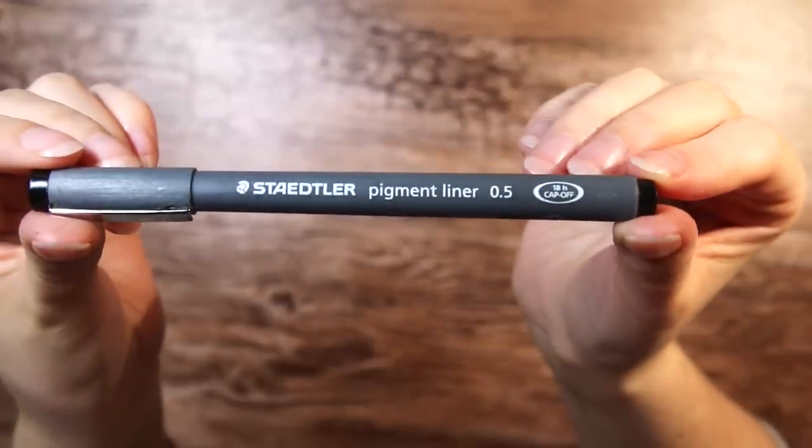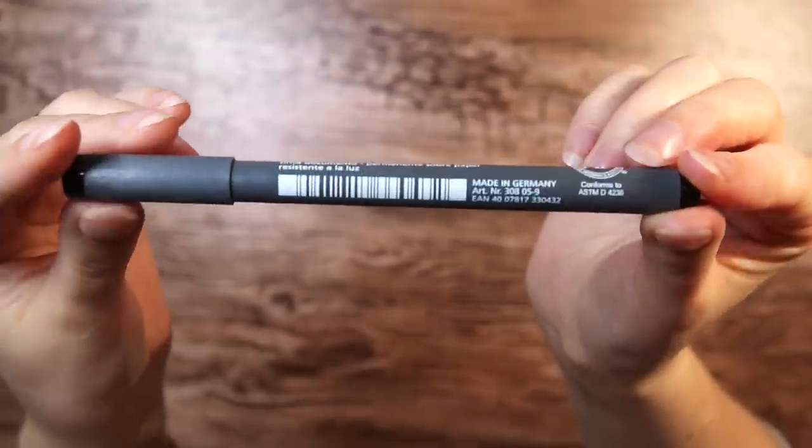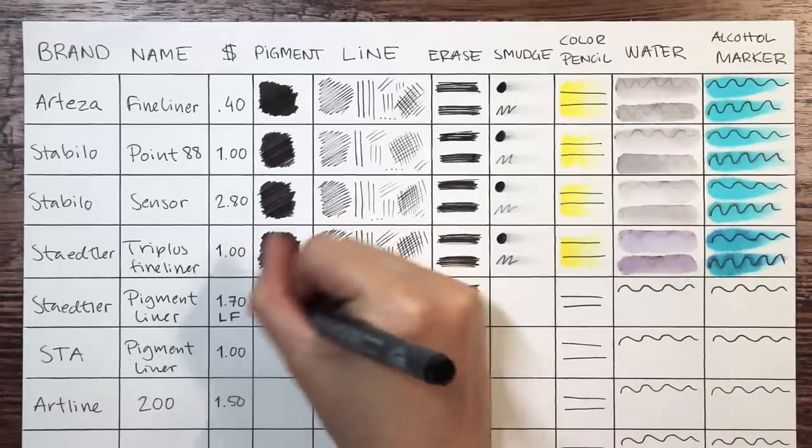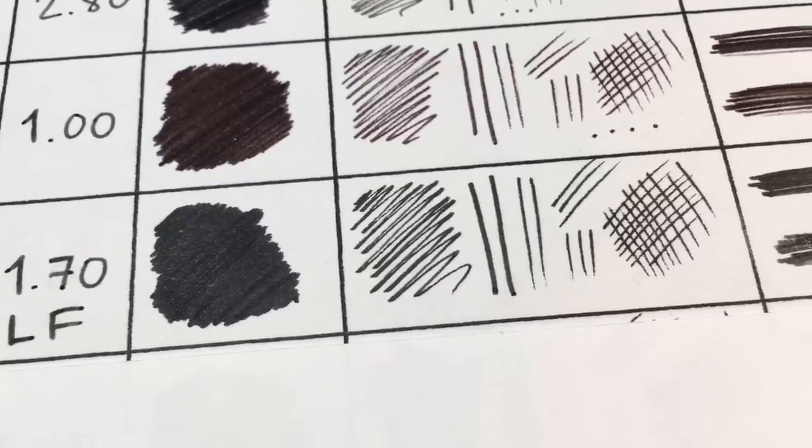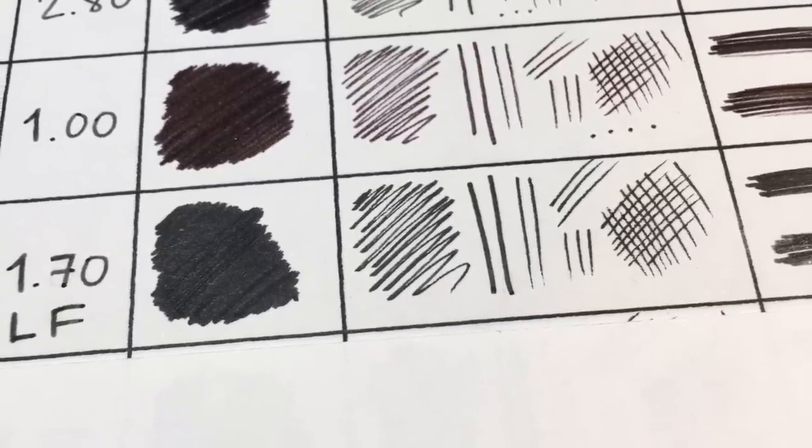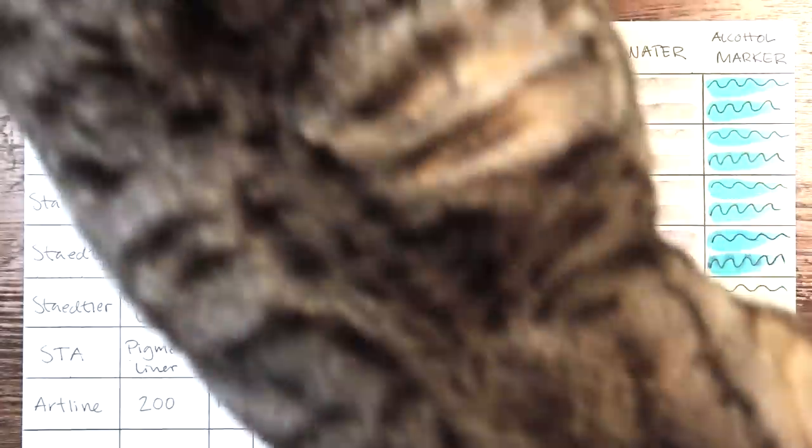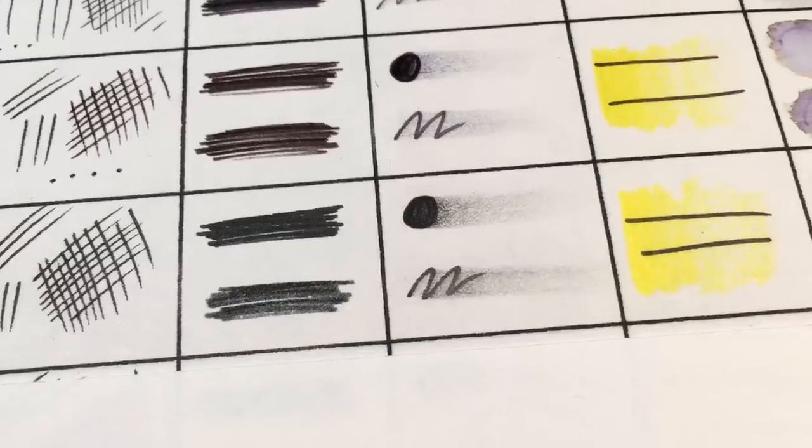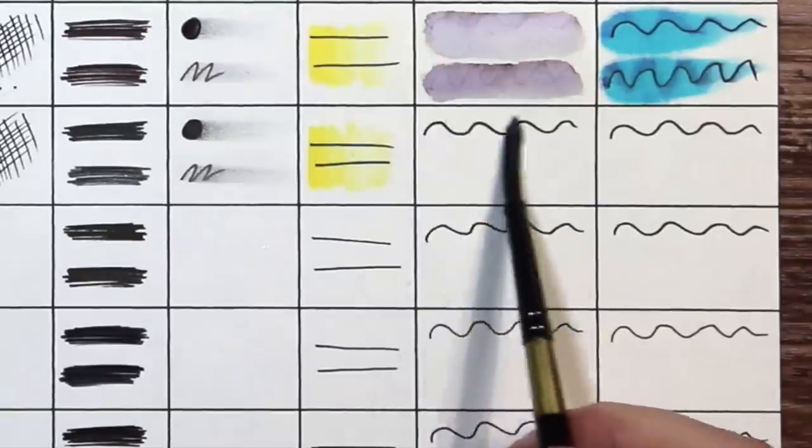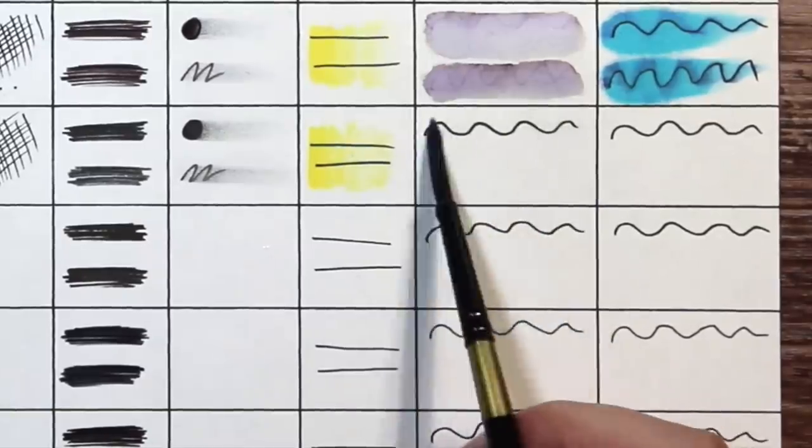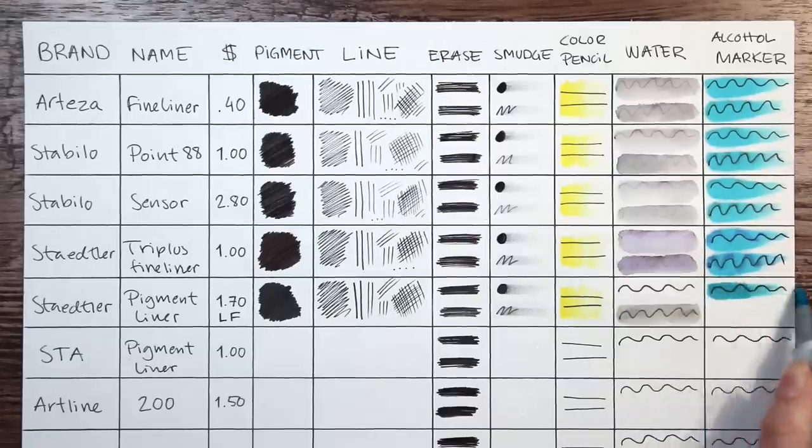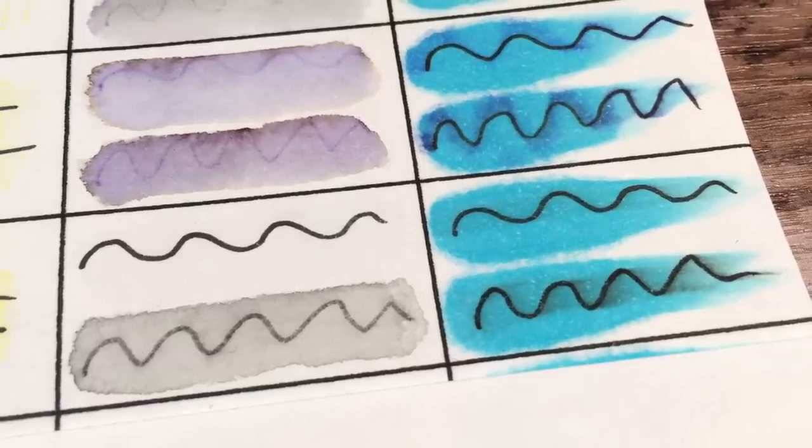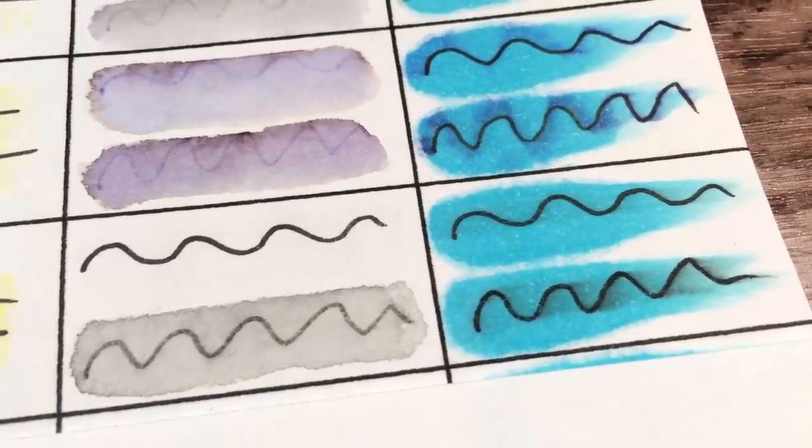Then we have another Stedler pen, it's called Pigment Liner. It is about $1.70 and it should be lightfast. The ink looks pretty even compared to previous ones but not as pigmented as you would expect it to be from its name. This one clearly fades in the eraser test however it is the first one that doesn't bleed in the watercolor test. I can see tiny tiny traces of smudging with alcohol but it is barely visible so to me it passes in the marker test too.